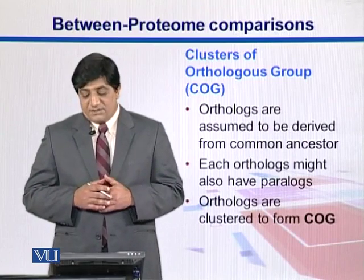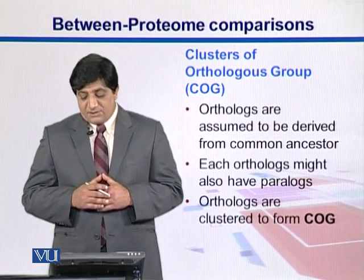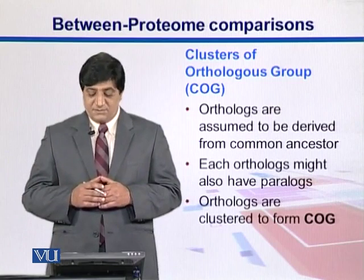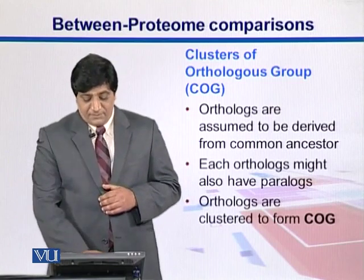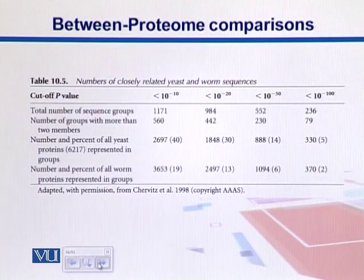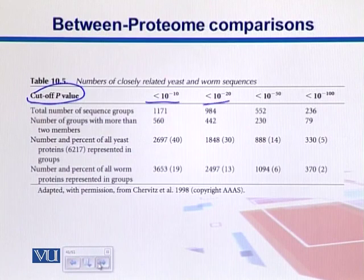We can call these clusters of orthologous groups, or COGs. Since orthologs are believed to be derived from common ancestors, they might also have paralogs — within organisms, orthologs might also undergo duplications. Orthologs can be studied as COGs. Here we have examples with orthologs between yeast and worms at different p-value cutoffs.